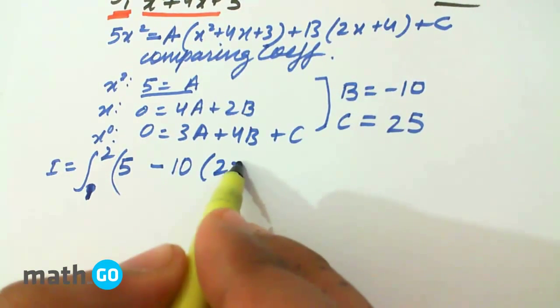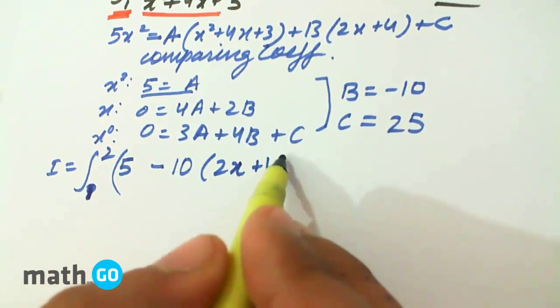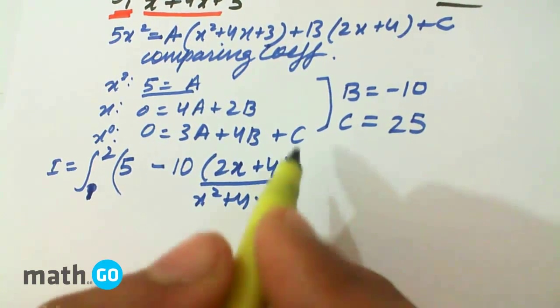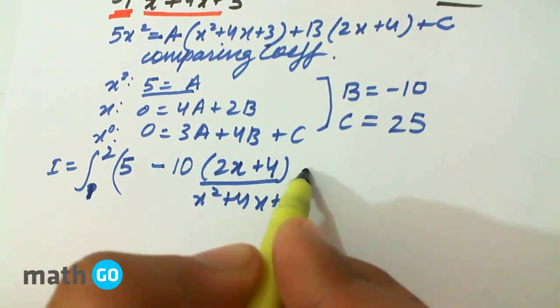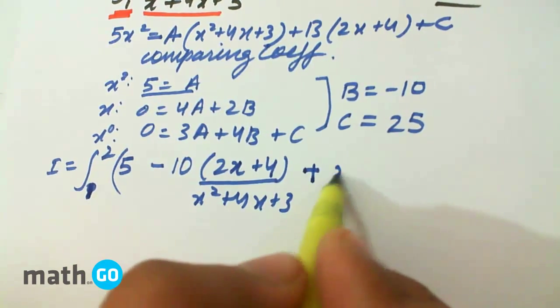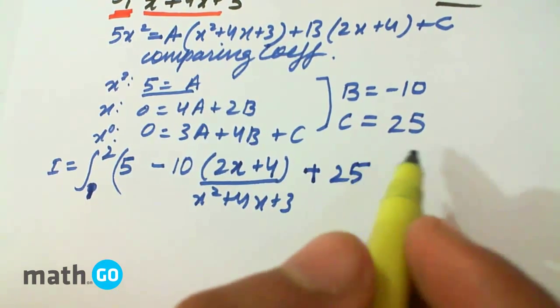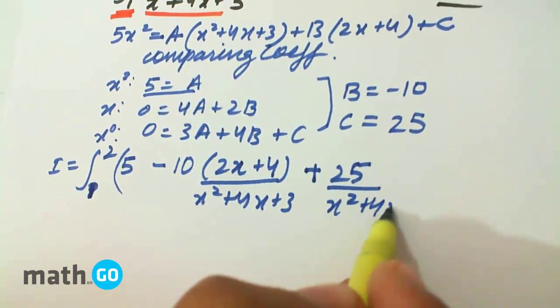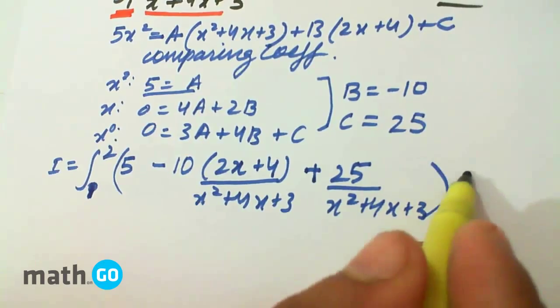The second term is minus 10 times 2x plus 4 upon x² plus 4x plus 3, plus 25 upon this denominator, dx.